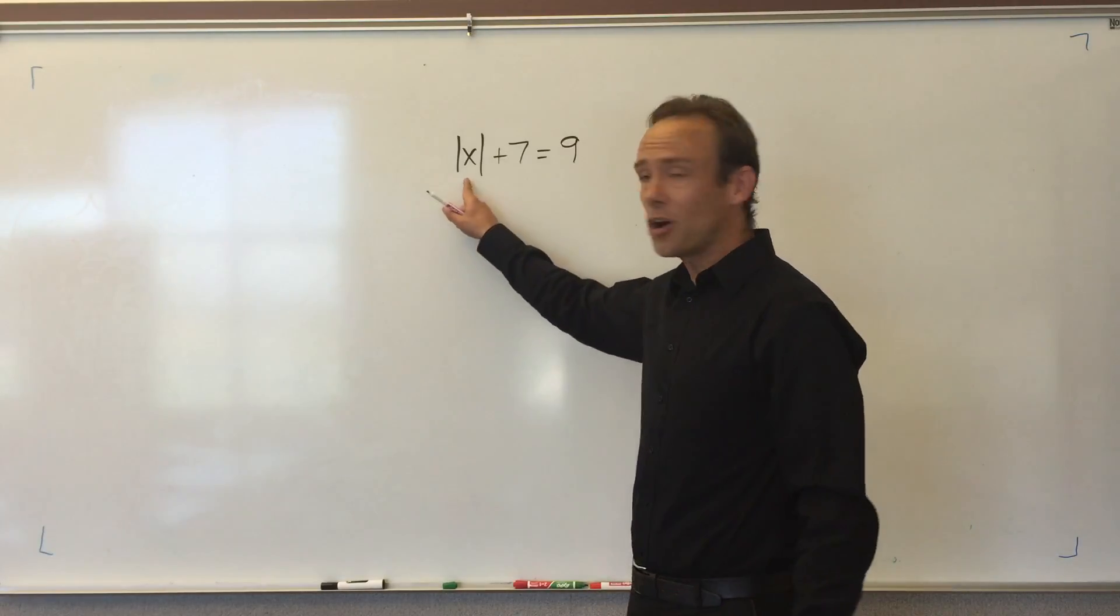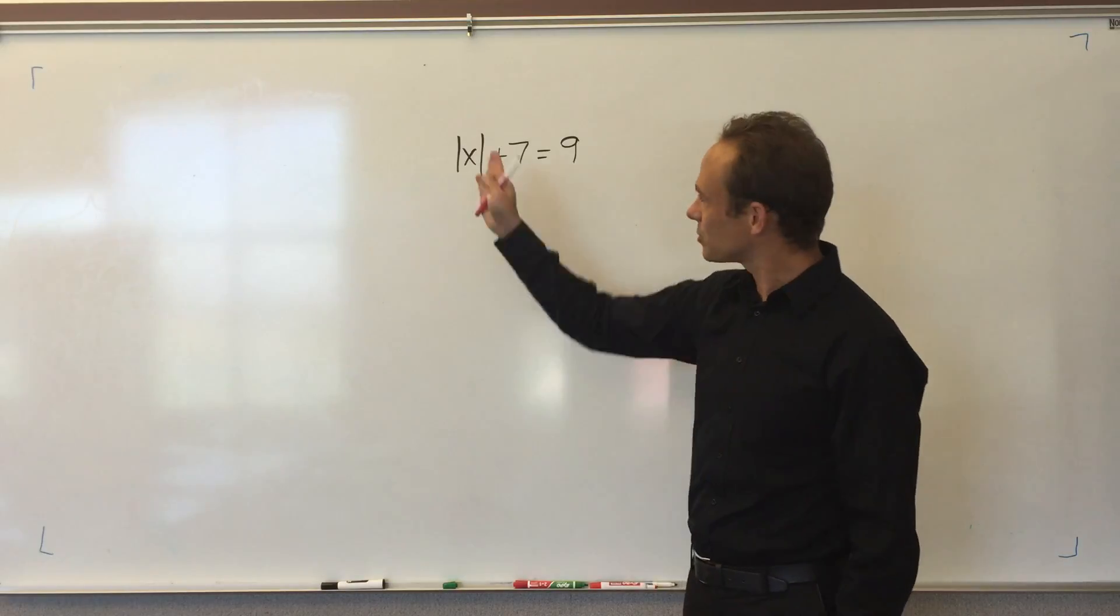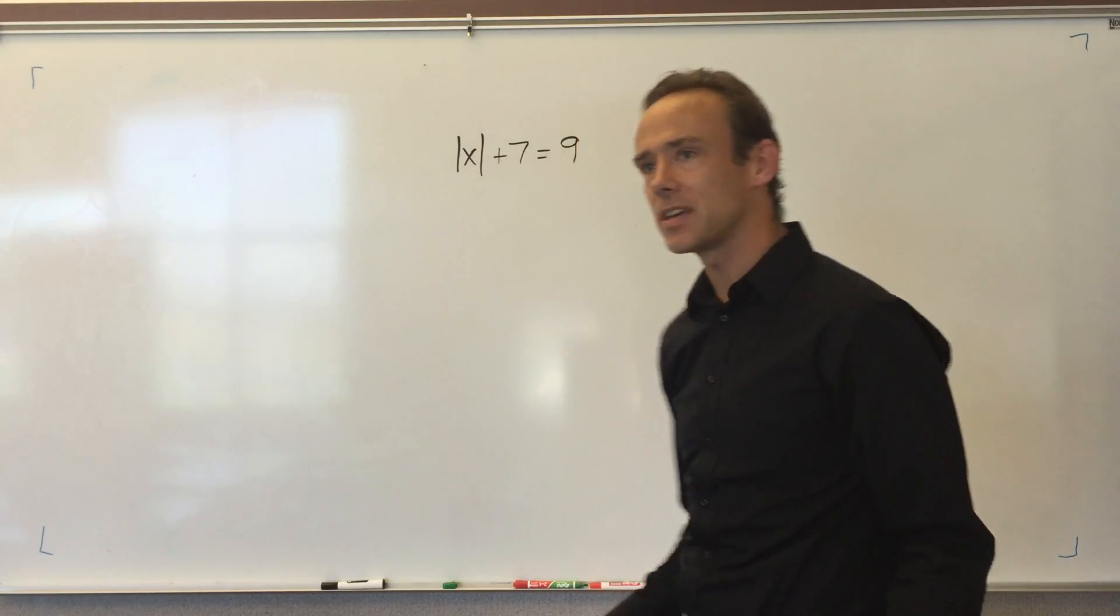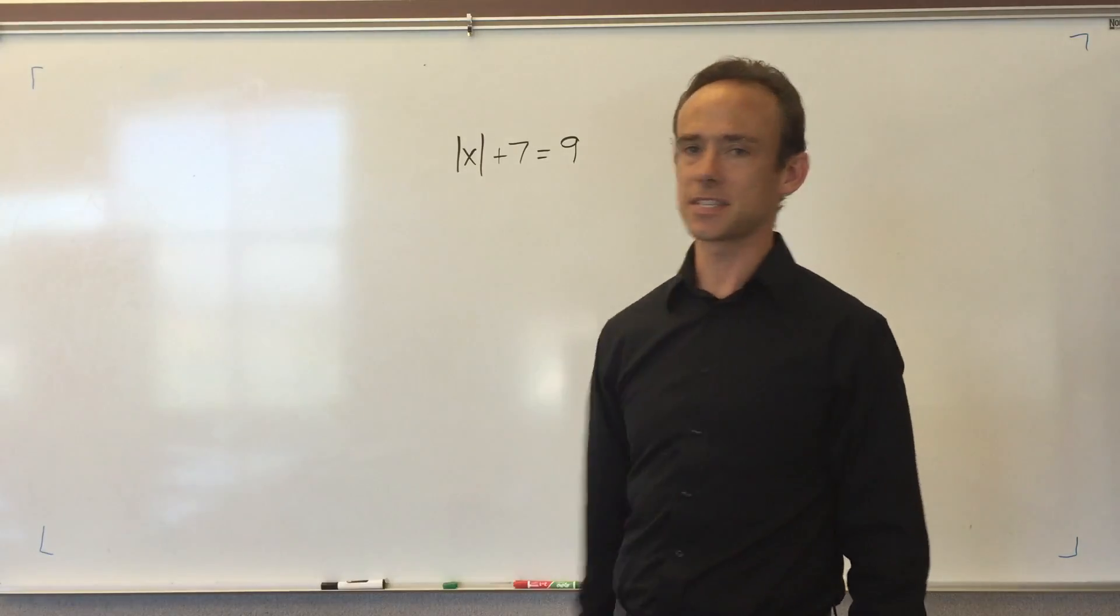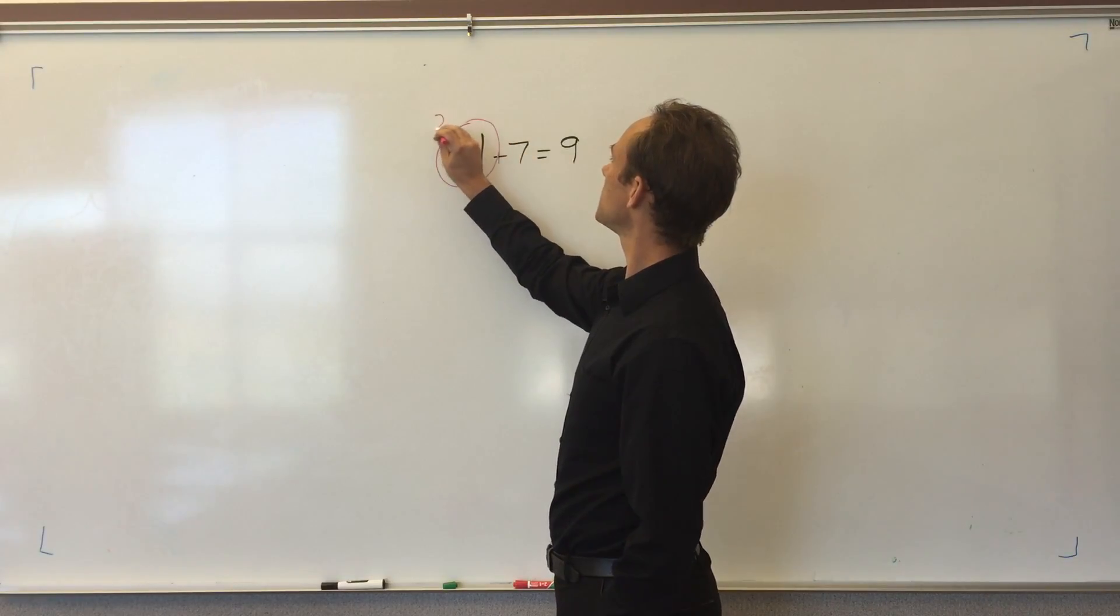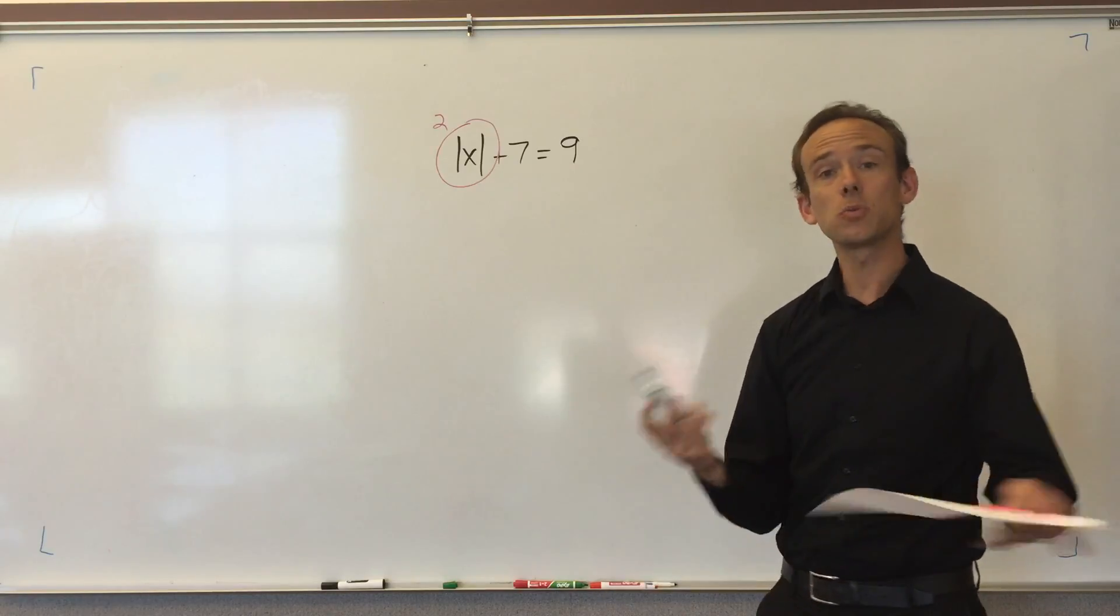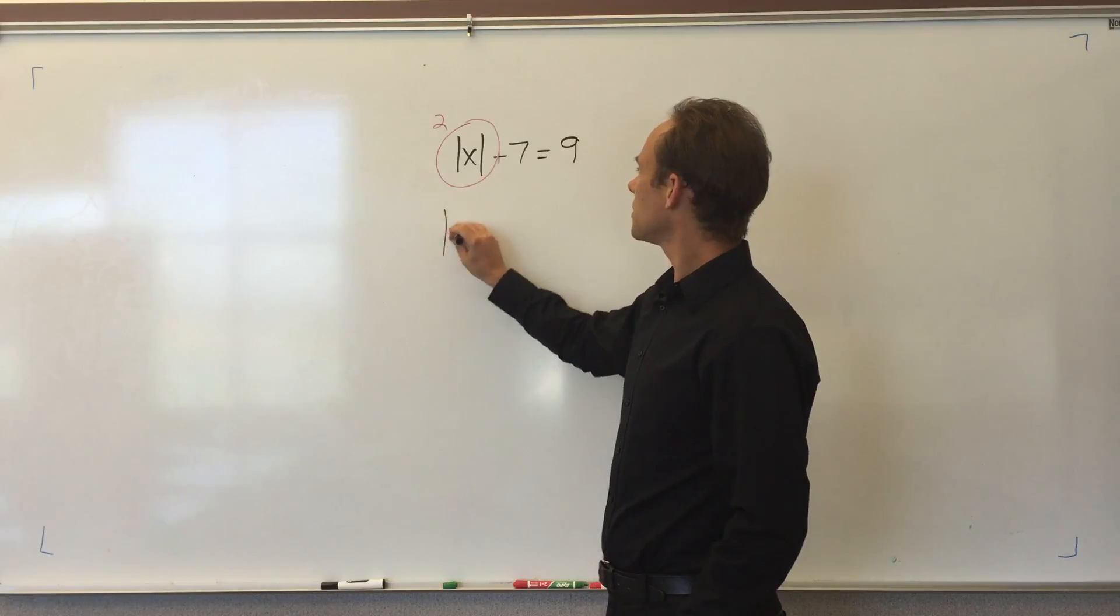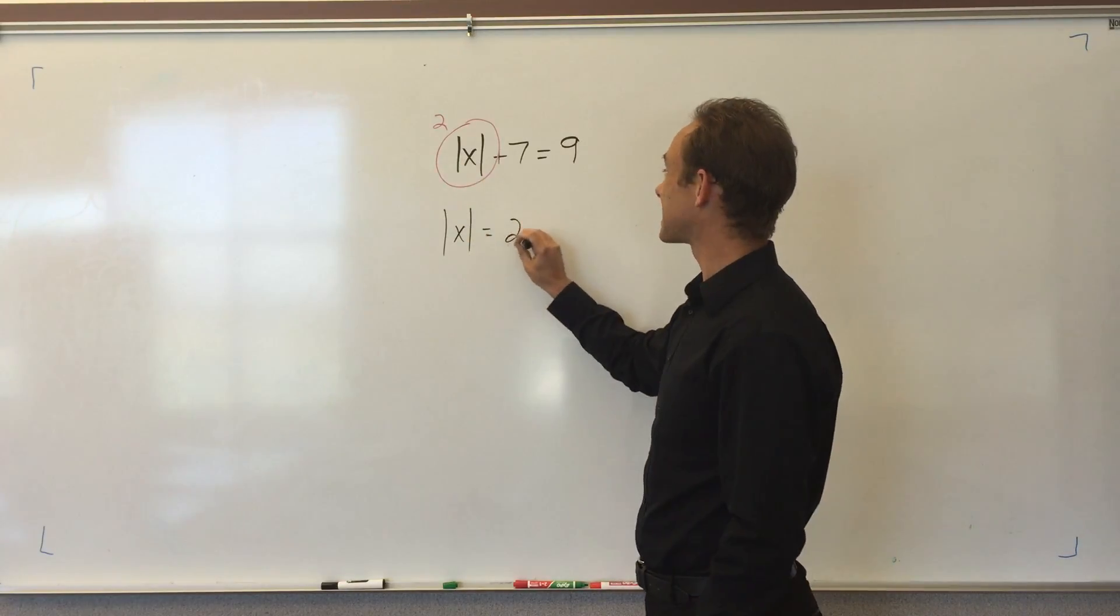We need to solve for x. This really reads like the absolute value of something plus 7 gives you 9. What is that something to which the absolute value of it you need to add 7 to get to 9? One way to look at this is to say that must be 2, because 2 plus 7 is 9. I know the absolute value of x has got to be exactly the same as 2.